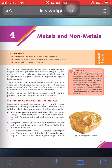Hello students, today we start our fourth chapter — Metals and Non-Metals. In this chapter we read about the physical and chemical properties of metals and non-metals. Before we start this chapter, we have to know what are the metals and non-metals.